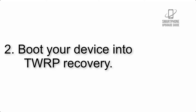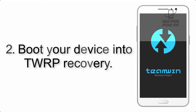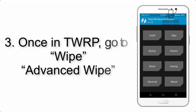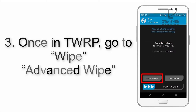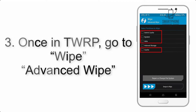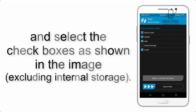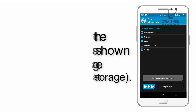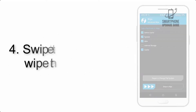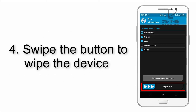Step 2: Boot your device into TWRP recovery. Once in TWRP, click on Wipe, then Advanced Wipe, and select the checkboxes as shown in the image, excluding internal storage. Step 4: Swipe the button to wipe the device.